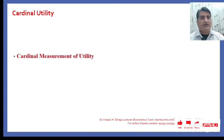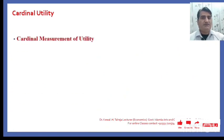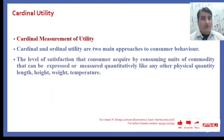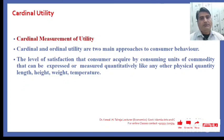These are the assumptions on the basis of which cardinal utility functions. The cardinal and ordinal utility are two main approaches to consumer behavior. Cardinal utility means the level of satisfaction that a consumer acquires by consuming units of a commodity, which can be expressed or measured quantitatively like any other physical quantity — just as length, height, weight, and temperature are measured, likewise the utility or level of satisfaction of a consumer is measured.